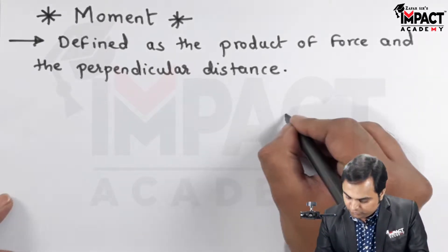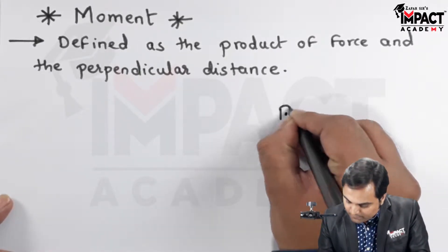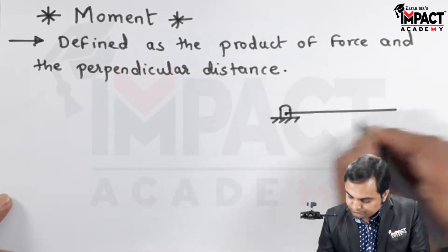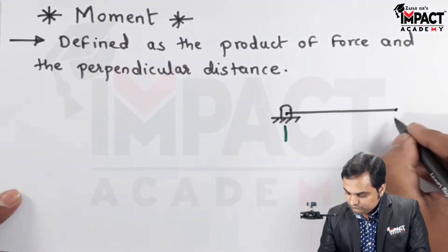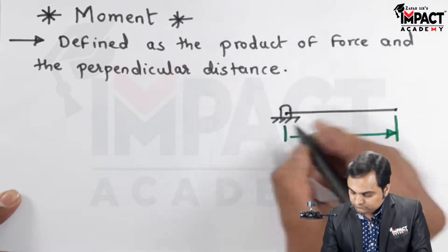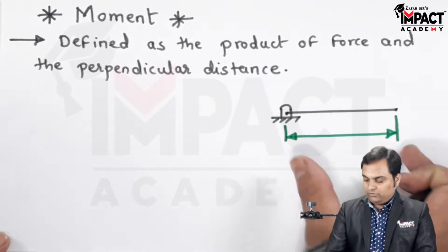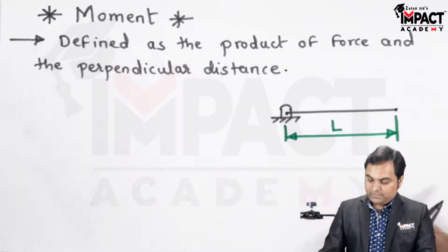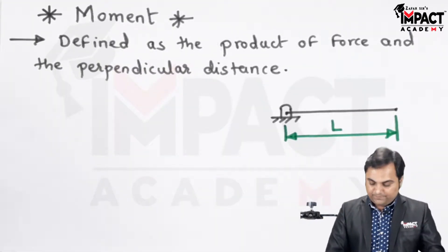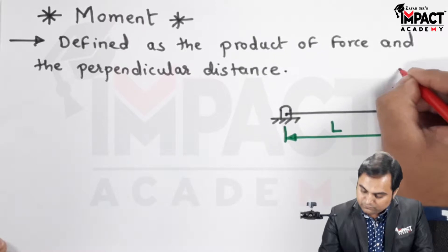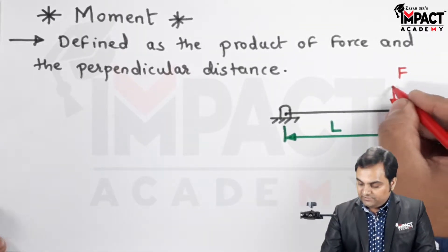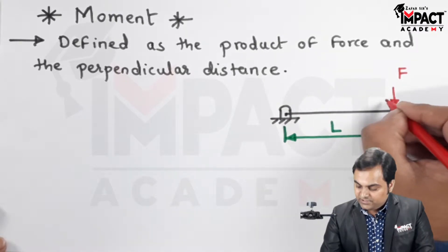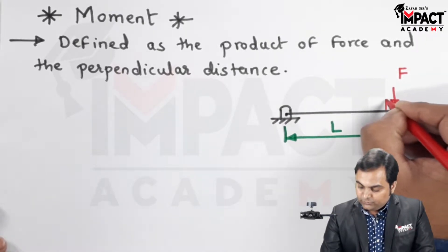In order to explain it, I will draw a diagram here. Here I am considering a lever of length L, and at the end of that lever a force F is acting. Now we can see that force and the distance are perpendicular to each other.